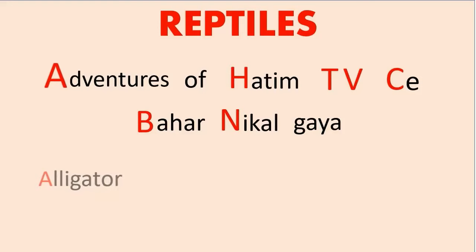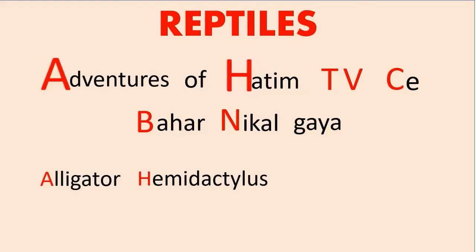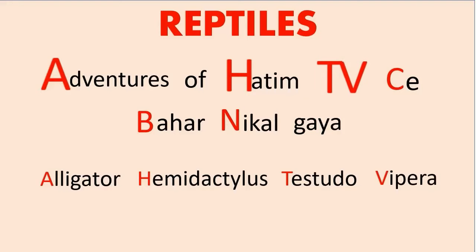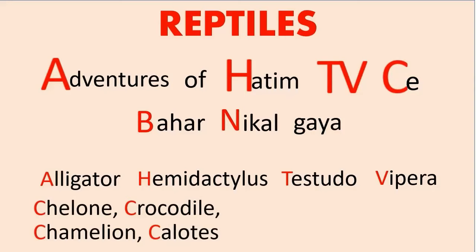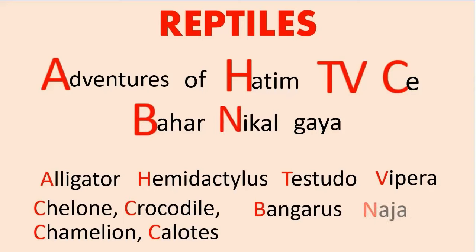Adventures of's A is for Alligator. Hatim's H is for Hemidactylus. TV's T is for Testudo and V is for Vipera. Then C appears 4 times: C for Crocodile, C for Chameleon, C for Chelone. Baahar's B is for Bungarus. Nikal's N is for Naja. And Gaya — G is for Gavialis.